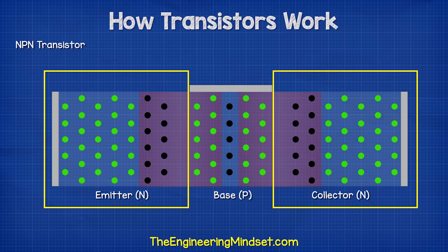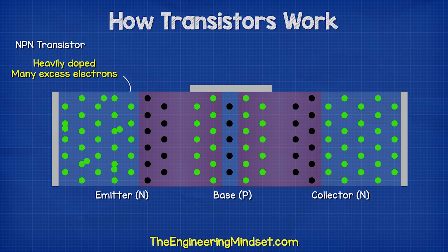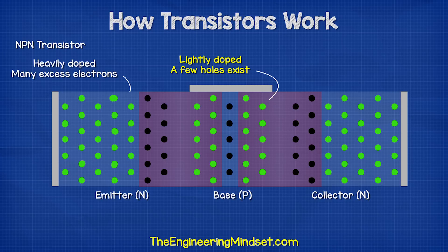In an NPN transistor, we have two layers of N-type material, so we have two junctions and therefore two barriers, meaning no current can flow through it ordinarily. The emitter N-type material is heavily doped, so there are a lot of excess electrons here. The base P-type is lightly doped, so there are a few holes here. The collector N-type is moderately doped, so there are a few excess electrons here.